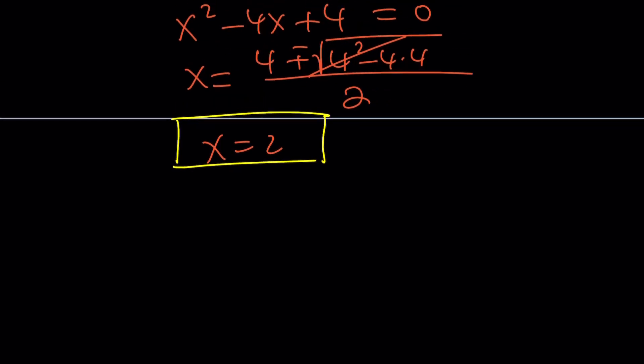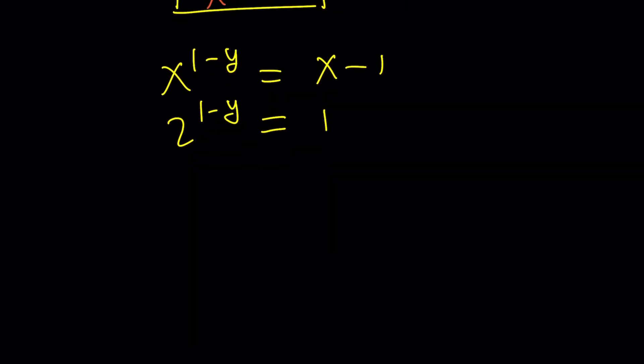Now, here's a good question that I want to raise: are there complex solutions for x? Something to think about. But I'm going to check out what happens with the y values. As before, we can replace x with 2 in one of these equations. Let's use the second one. If you replace x with 2, you get 2 to the power of 1 minus y equals 2 minus 1, which is 1. This is 2 over 2 to the y equals 1. From here, you get 2 to the y equals 2.